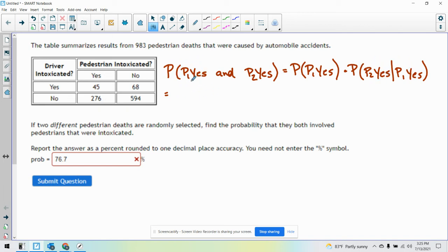So the probability of the first thing: the total is 983. Of that 983, how many involved a pedestrian that was intoxicated? That's these two. So it's 276 plus 45, that's going to be 321 times.